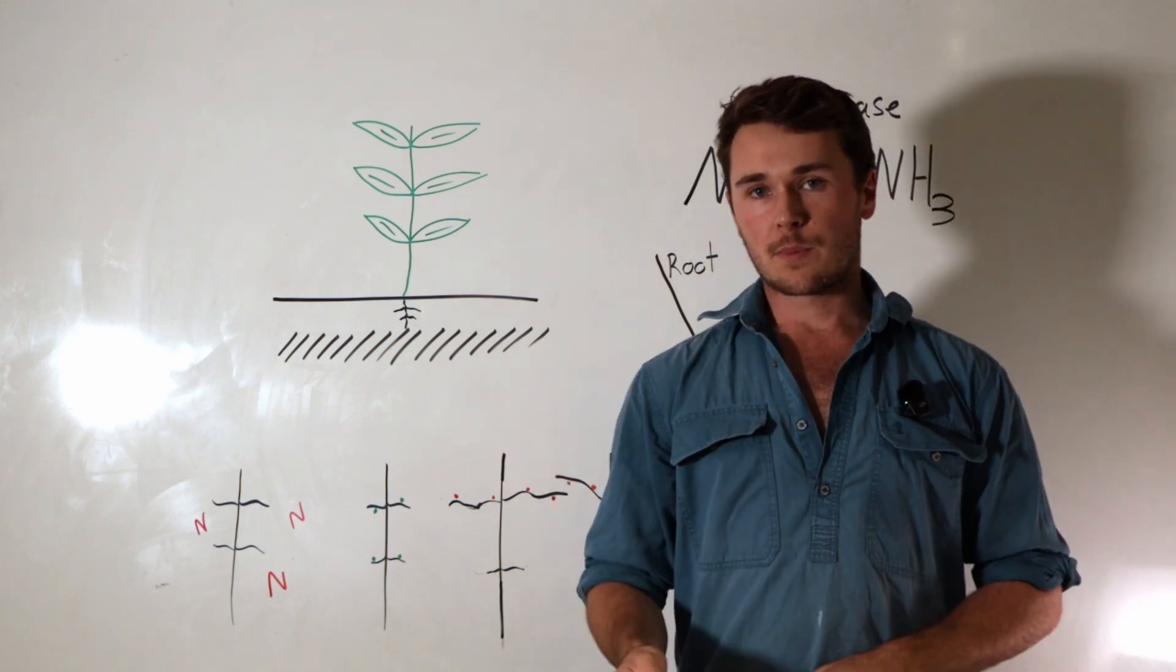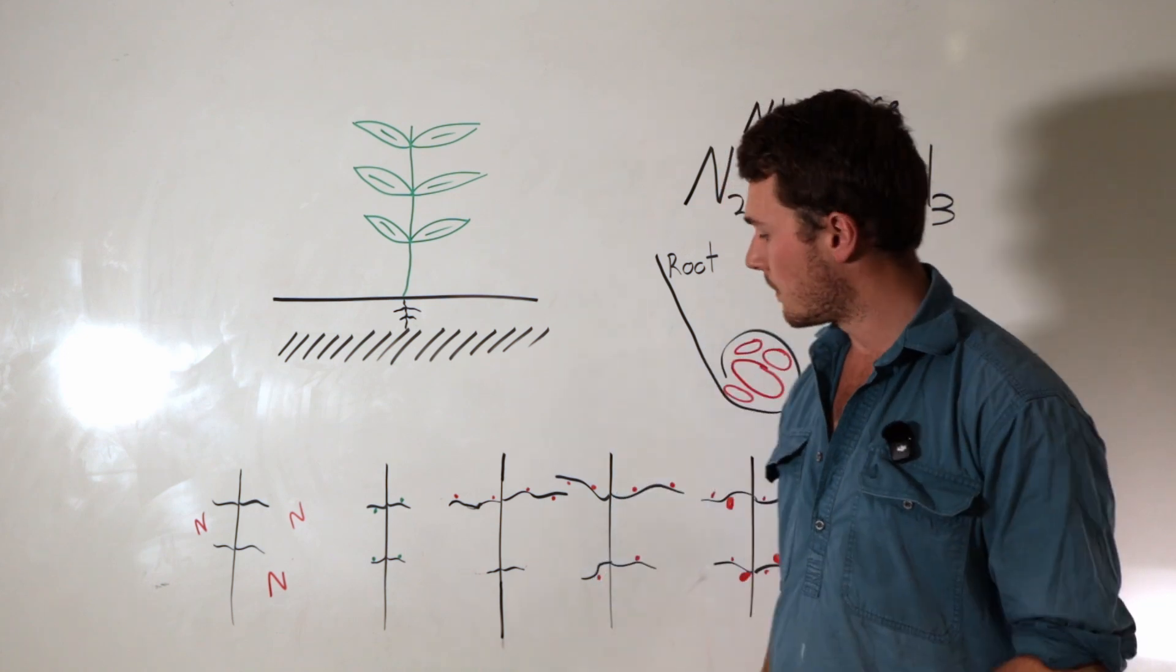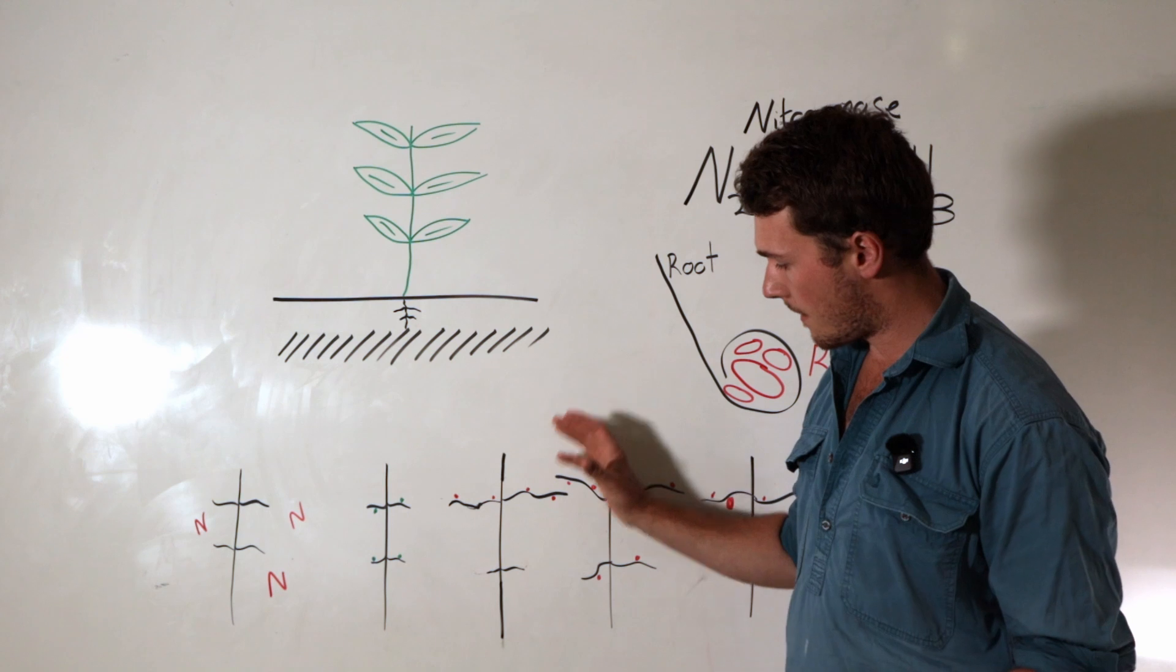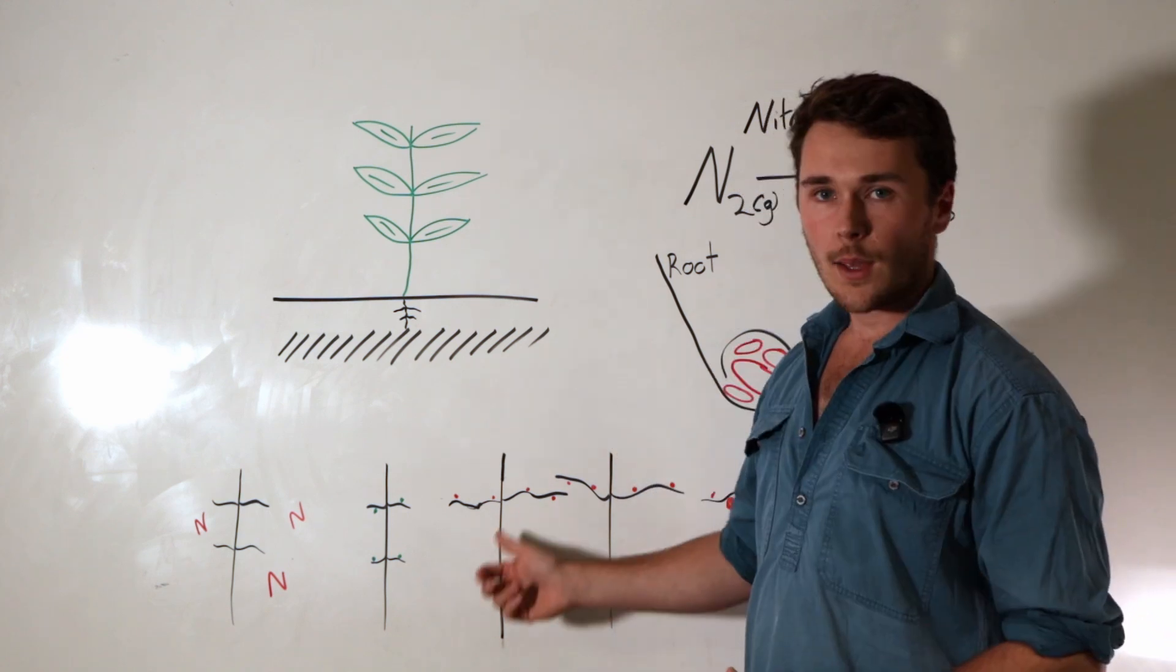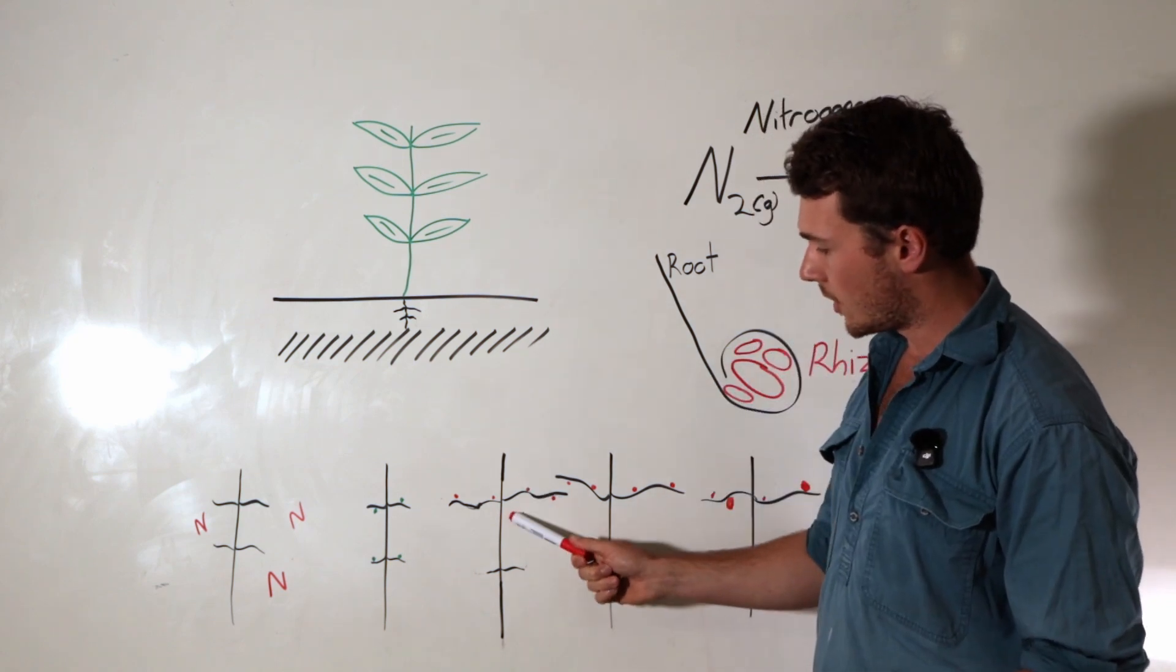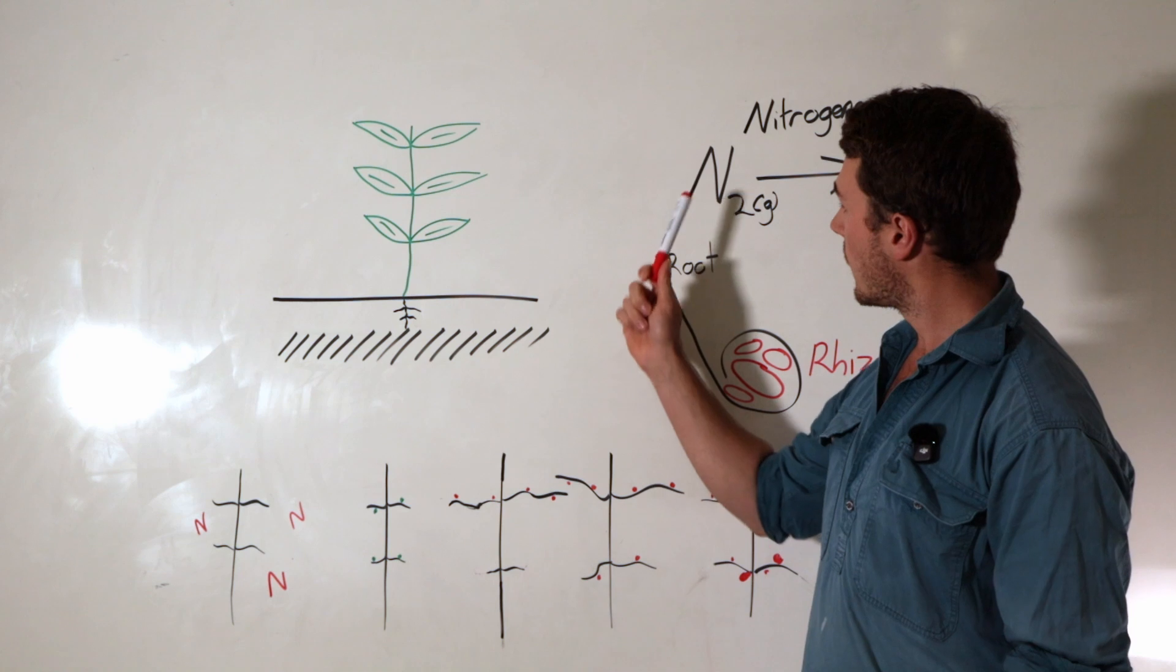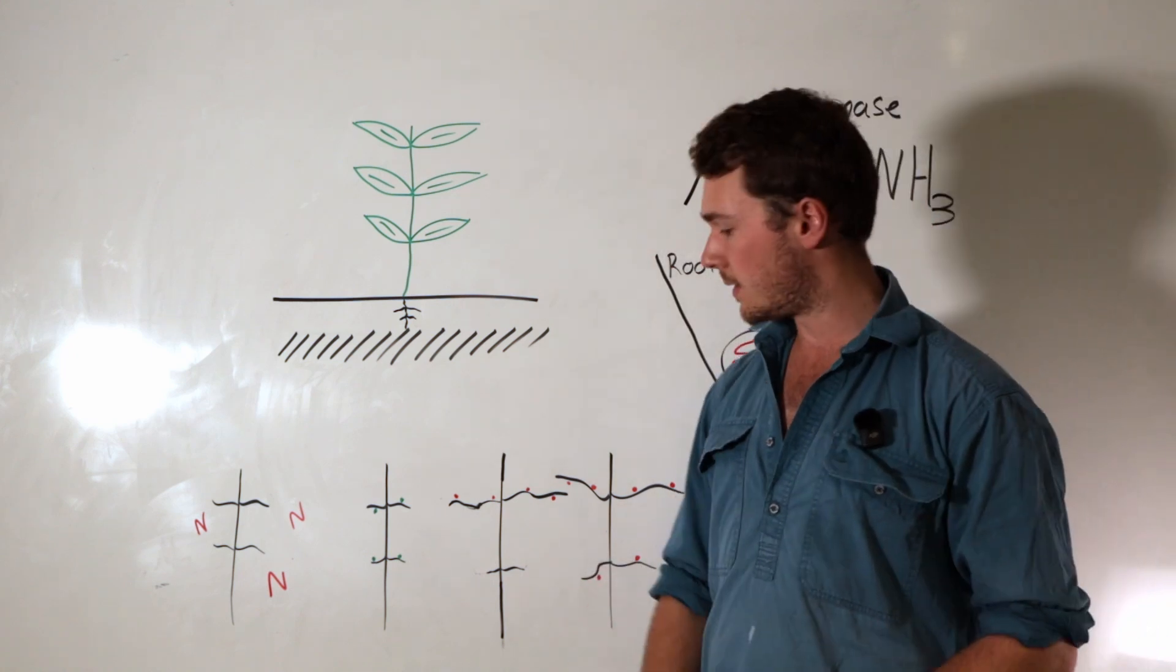Some species of legumes have different distributions of legumes throughout their roots, but overall, it should be pretty well throughout the plant root if you have good structure. So if you're seeing a distribution like this, it means that there's not enough gas exchange, so not enough nitrogen gas getting into the lower parts of the root system.